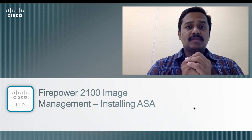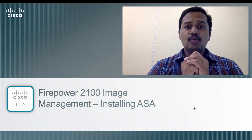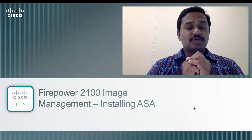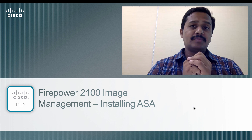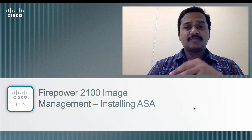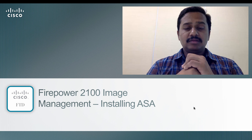In the other video I showed you how to re-image a box from ASA to FTD. In this video we are going to look at how to re-image the box from FTD to ASA, which is almost exactly the same as from ASA to FTD except for a few commands which we will look at.